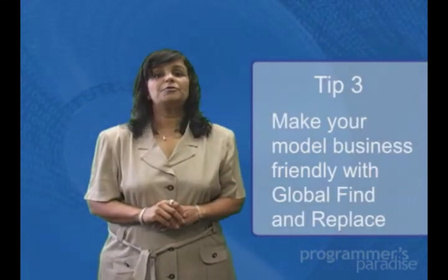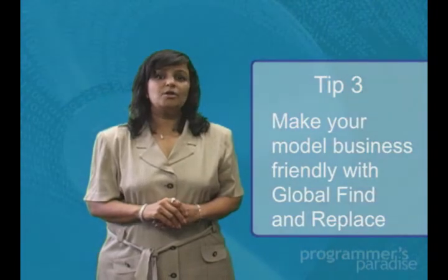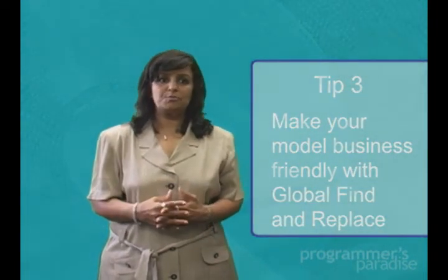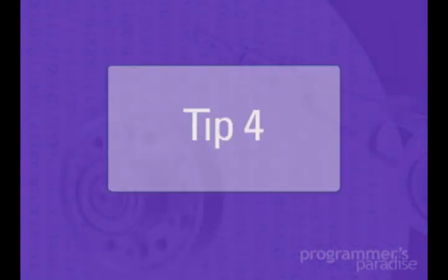Tip 3: make your model business friendly with global find and replace. You can use the find and replace feature to globally search for anything that is exposed in the metamodel, including all string properties, and optionally replace with the text specified. You can use features such as matching case, wild cards, and search directions. This gives modelers the ability to make changes across large models to ensure consistency throughout their metadata.